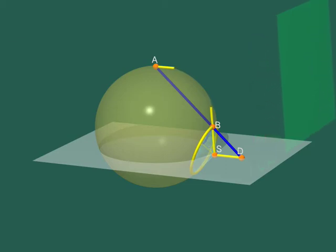Let's see. Saying that DS has a constant length means precisely that D describes a circle with centre S, so that the projection of our yellow circle on the horizontal plane through S is contained in a circle.